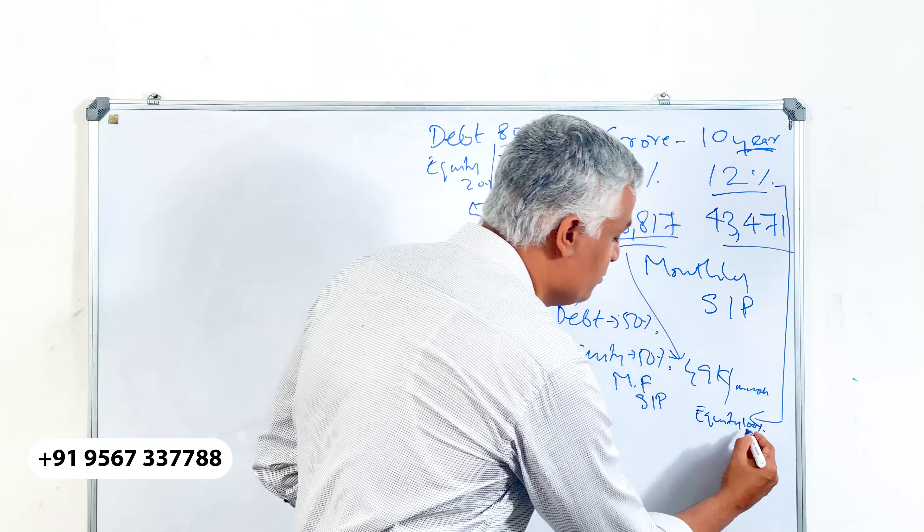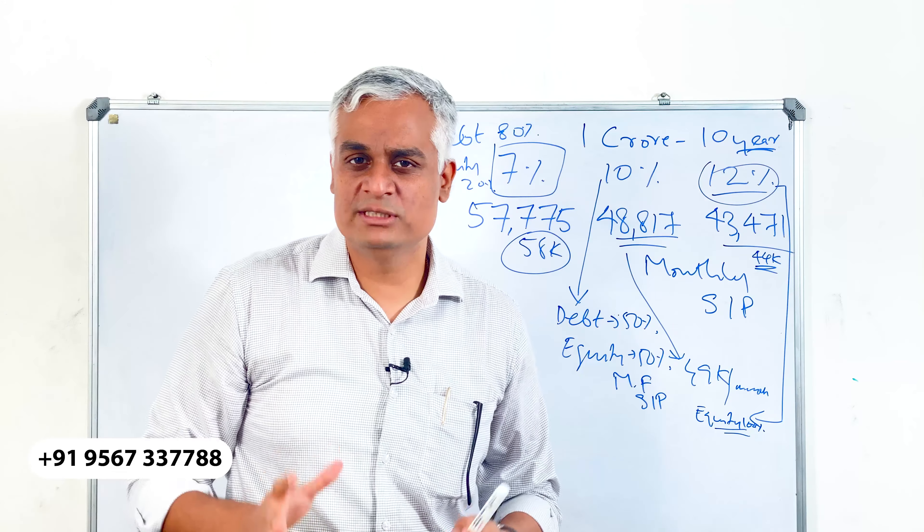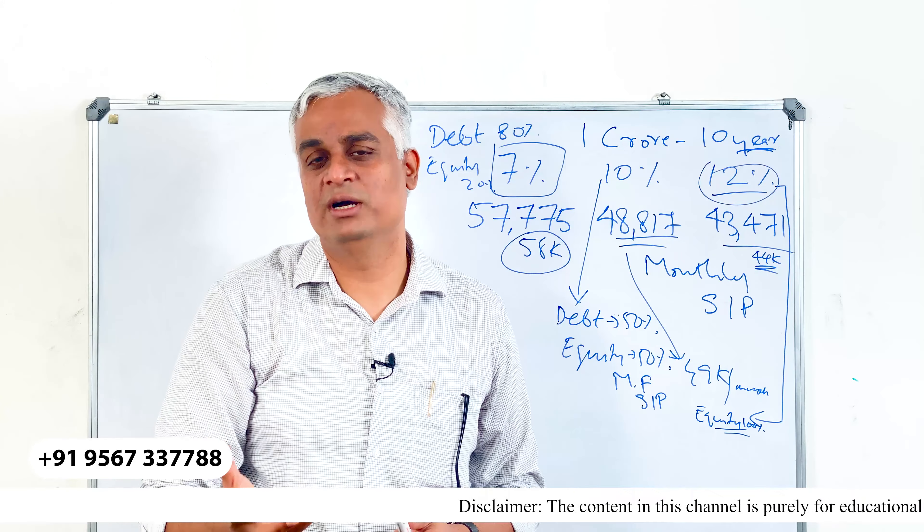If you are ready to take a little more risk, with 12% return, you can allocate maybe 100% to equity in the initial period. At a later stage, you can reduce your equity allocation and bring more towards debt. In that case, you have a probability to get 12% return easily. If you get 12% return on a year-on-year basis, in 10 years, if you invest about 44,000 rupees per month, you can make your 1 crore rupees.